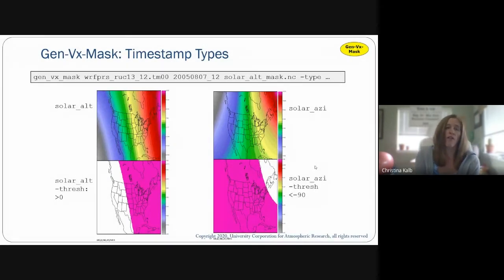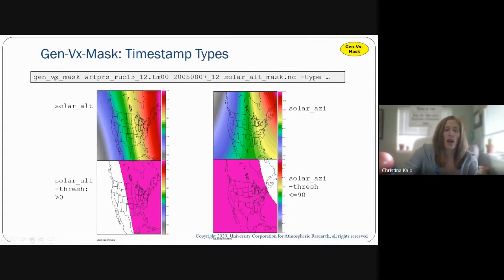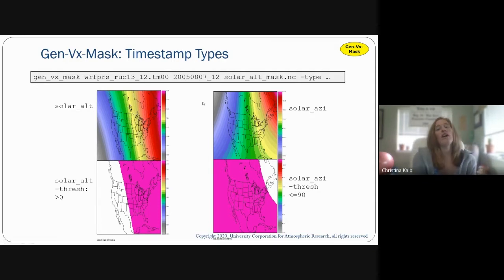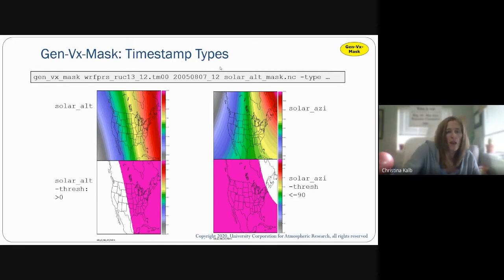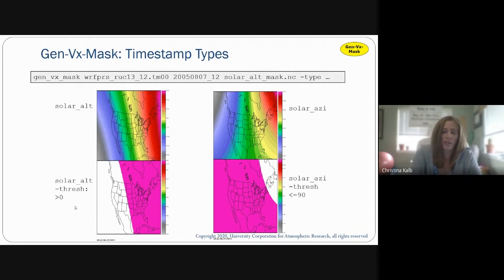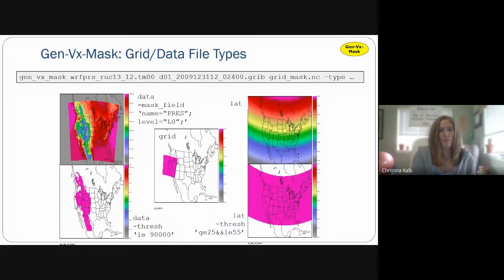Here is an example of how to use the timestamp types for solar altitude and solar azimuth. The command uses the same input file but with a timestamp — August 7th, 2005 at 12 UTC. We're getting the solar altitude and solar azimuth, and giving it a threshold at the bottom generates the two masking regions shown. That's another option for getting mask output.